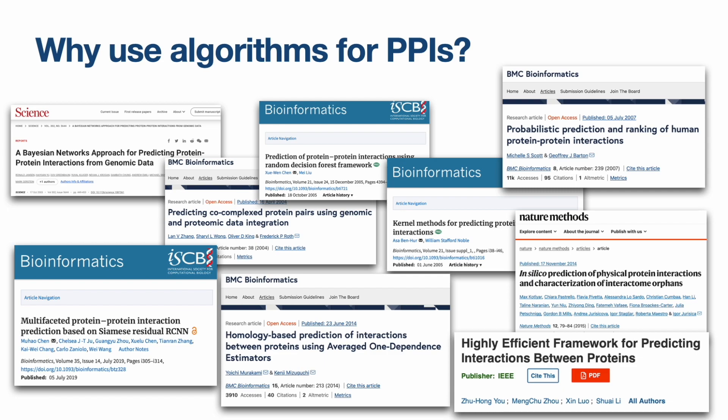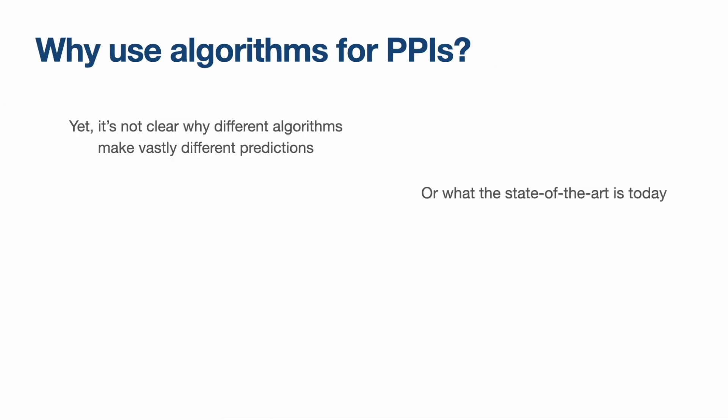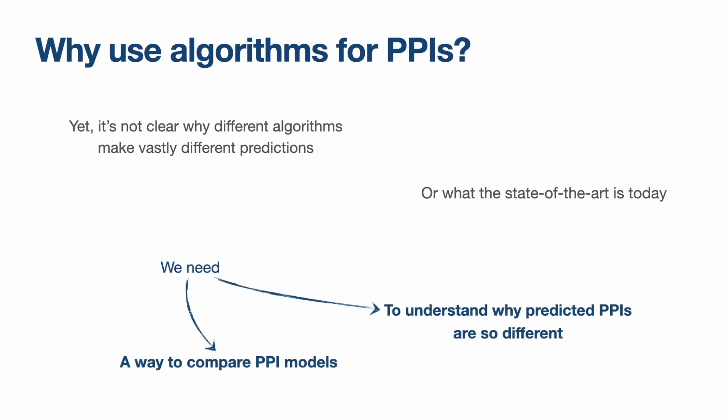Early models focused on Bayesian methods; more recent ones rely on deep learning. It's great to have so many models, but at some point we need to know whether the imputed PPIs can be trusted, and it's still all a bit confused. The problem is that reported performance scores often cannot be compared or replicated due to proprietary data or inconsistent and flawed assessment methods. What we need is a reliable way to compare PPI models, and also to understand why models make vastly different predictions.